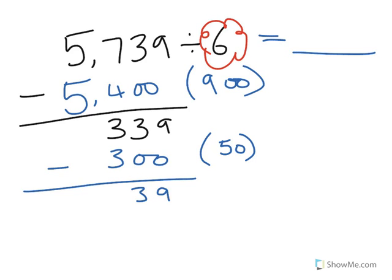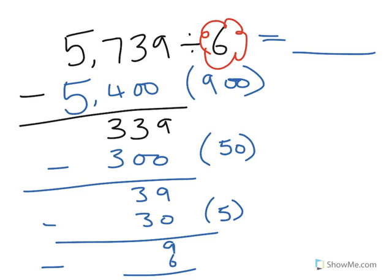I can keep whittling it down. I can lose 30, which is 5 lots of 6, leaves me with 9. And I can get rid of one more lot of 6, which leaves me with 3 left over, which will be my remainder.